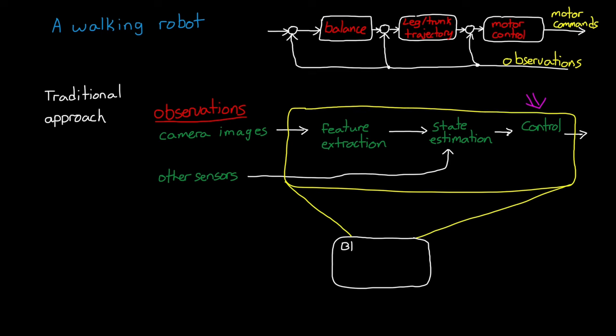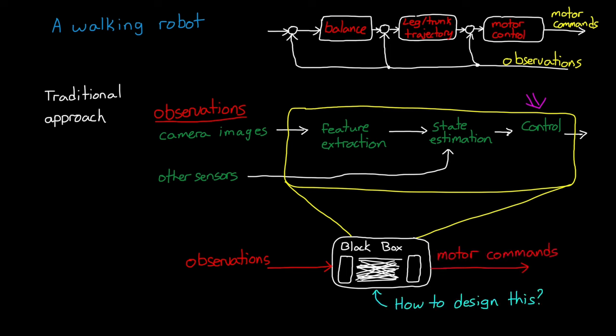Instead of all this complexity, let's squeeze it down into a single black box that simply takes in observations and outputs the low-level motor commands directly. If we were infinitely smart, we could sit down and design a function that could get a robot to walk without concerning ourselves with all of the internal steps along the way. But since we're not, that's where machine learning comes in.